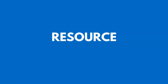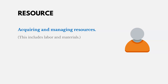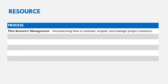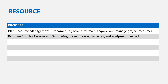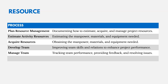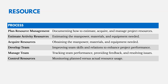Resource management covers acquiring and managing resources — both labor and materials. There are six processes: two in planning, three in executing, and one in monitoring and controlling. We plan resource management and estimate the resources needed — manpower, materials, and equipment. We then acquire those resources, develop the team by improving skills to improve performance, and manage the team by tracking performance, providing feedback, and resolving issues. Finally, we control resources by monitoring planned versus actual resource usage.